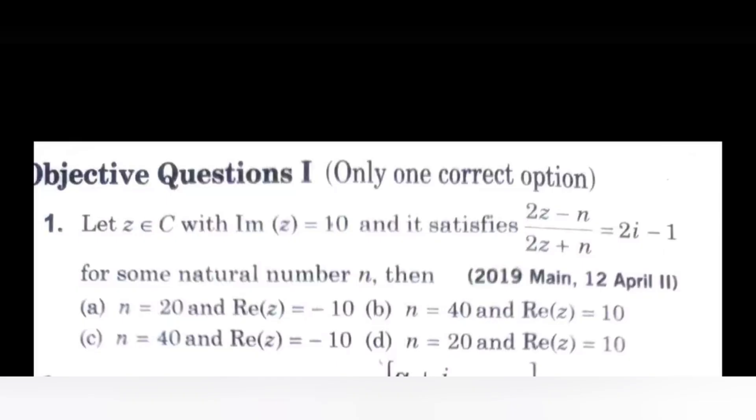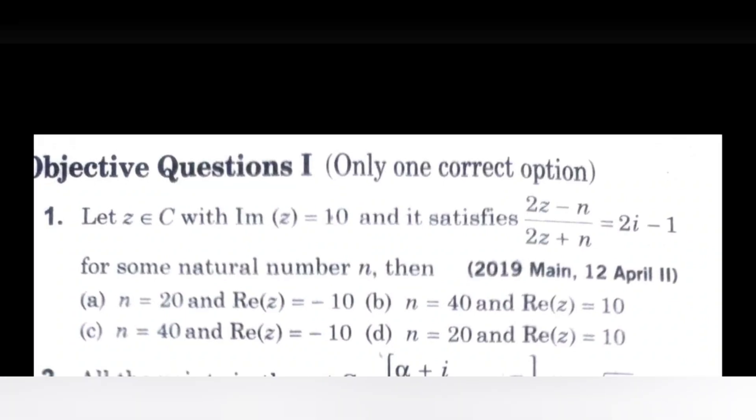The first question: let Z belongs to C with imaginary part of Z equals 10, and it satisfies 2Z minus N over 2Z plus N equals 2i minus 1 for some natural number N. This question was asked in 2019. Now check which option is correct among A, B, C, D.